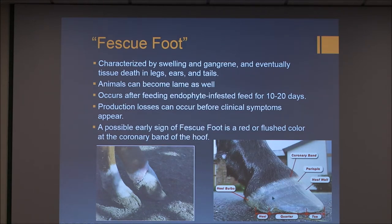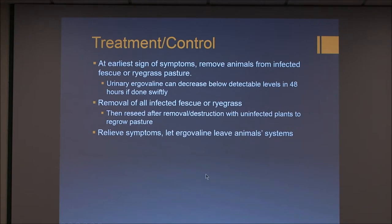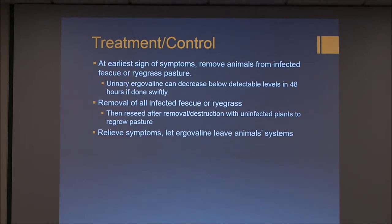Production losses can occur before you see clinical symptoms. An early sign that you might be able to spot would be a red or flush color at the coronary band. Unfortunately, I couldn't find an image with that red or flush color, but you can see here where the coronary band is. If you remove animals from the infected pasture early enough, you can see urinary ergovaline decrease below detectable levels within two days.